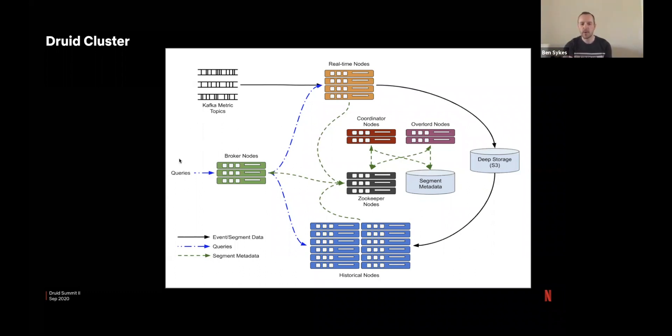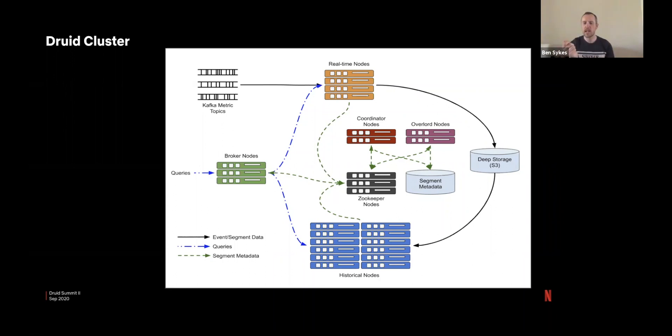And that's because when queries come in, the broker nodes can direct queries directly to those real-time segments. So as soon as a single event lands in that data source, it is queryable. It will also direct queries to the historical nodes if it's for a time period that's outside of what we're keeping in the real-time nodes.